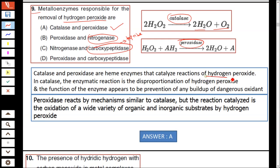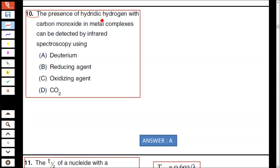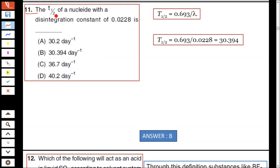Question number 10: The presence of hydrogen with carbon monoxide in metal complex can be detected by IR spectra using deuterium compound. Question number 11: The t½ half-life period of a nuclide with disintegration constant lambda. t½ is equal to 0.693 divided by lambda, hence 0.693 divided by 0.0228, which is 30.39.